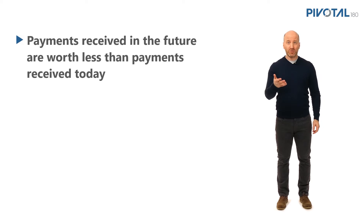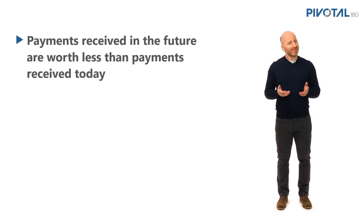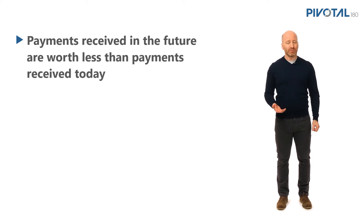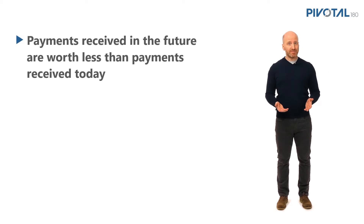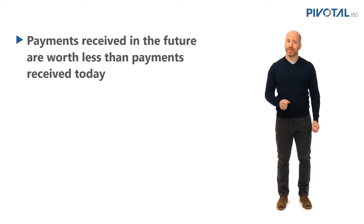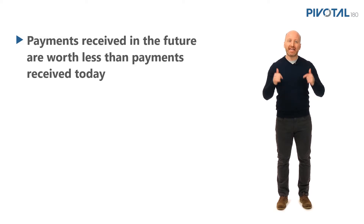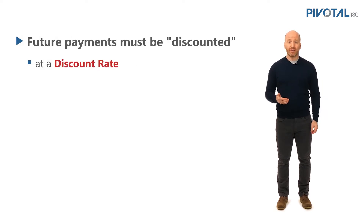Let's consider the concept of present value. The idea is this: payments that are received in the future are worth less to us than payments received today. I would rather have the money now and do something with it than get it a year from now. Alternatively, if I have money now and choose not to spend it, I can invest it and expect it to grow. Essentially, future payments need to be discounted back to the present in order to determine a point of indifference or equivalence.